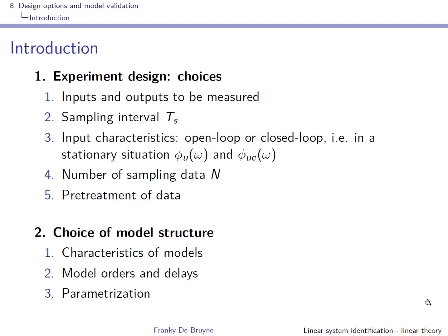Another design option is the choice of the model structure, and more particularly the choice of the parametrization. Are you going to use an ARX model, output error model, and so on? These model structures have different characteristics. For instance, the ARX model is really good in prediction, whereas the output error model is good in simulation. If you want good simulation, you'll probably use an output error or Box-Jenkins model. If you're interested in prediction, you'll use an ARX or ARMAX model.